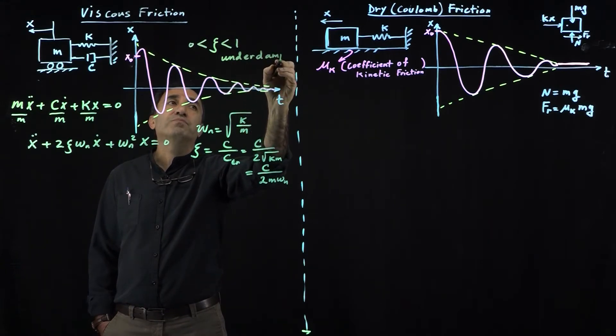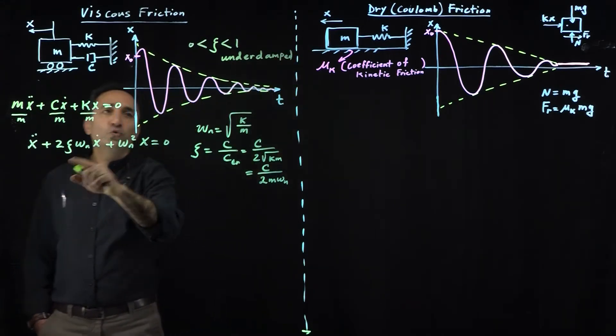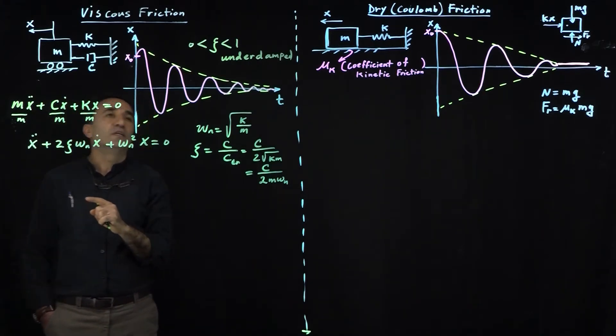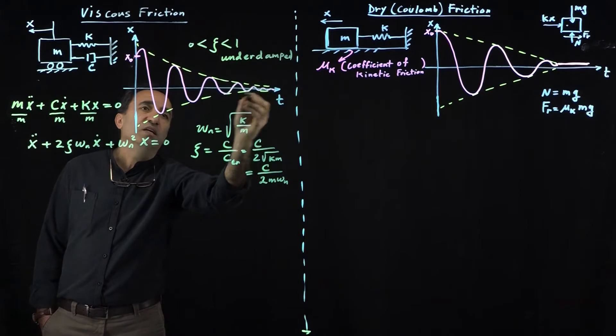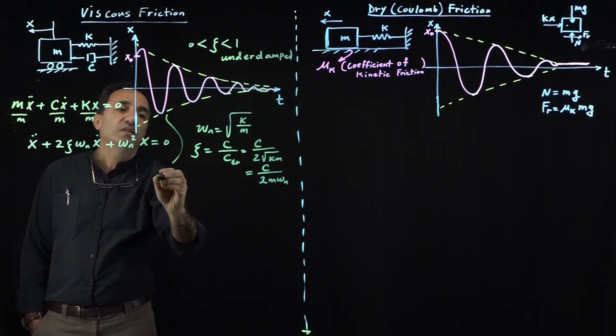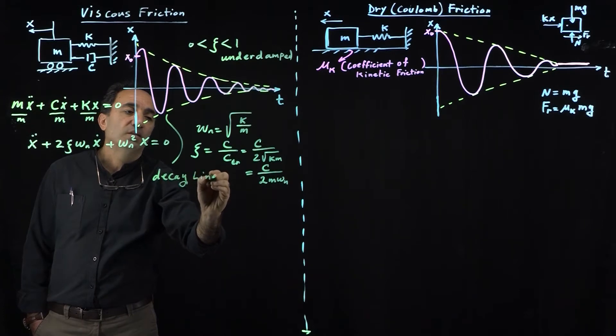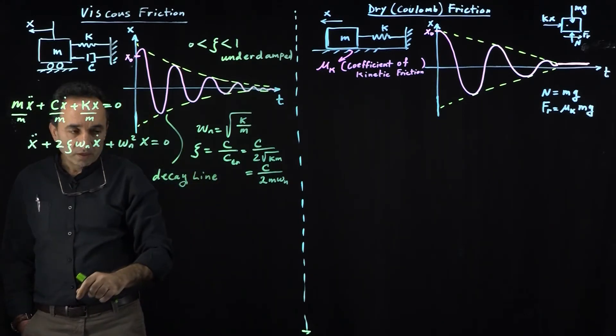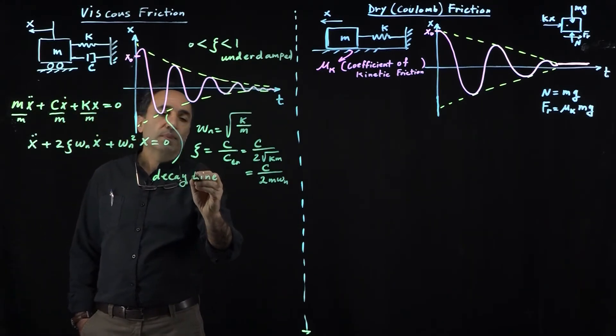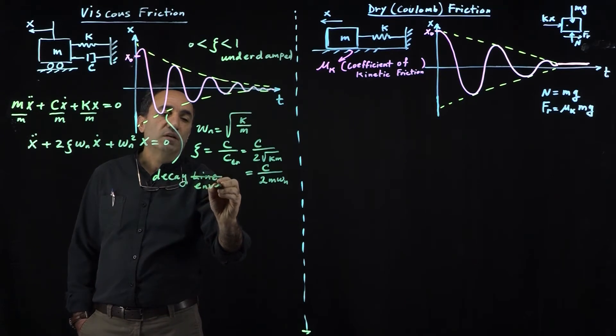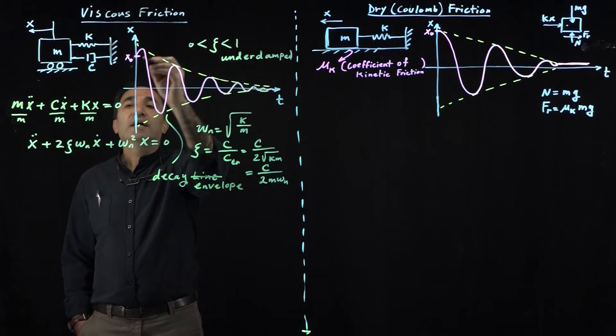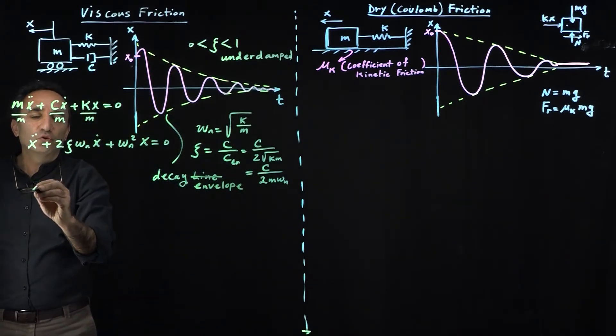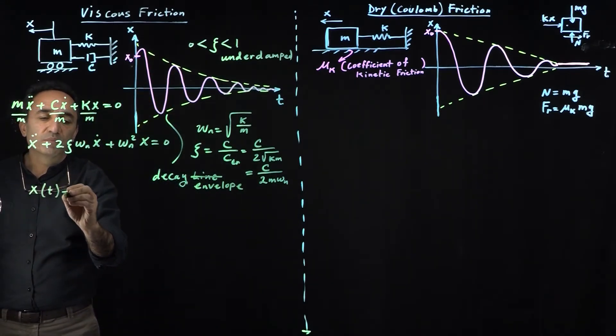The solution to this system has what we call a decay envelope. This is known as a decay envelope, this yellow line exponential that you see, because it's not a straight line actually. Let me give you the solution to this.